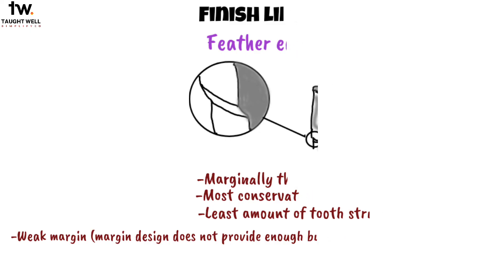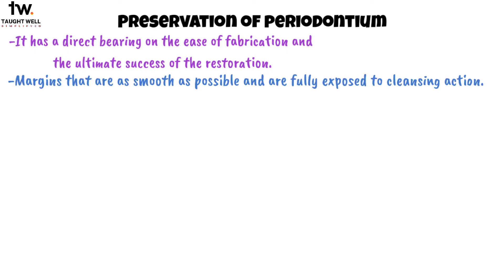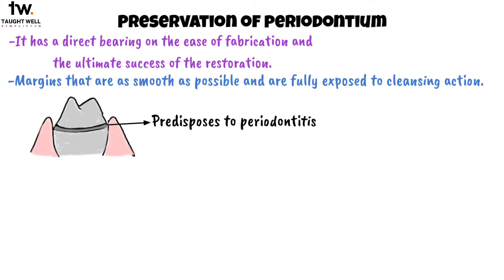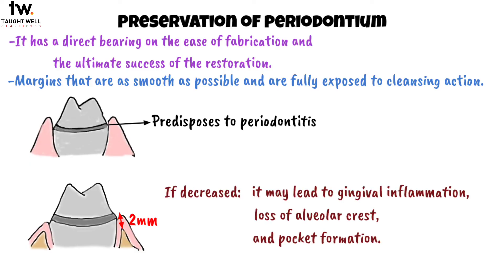The last principle of tooth preparation is the preservation of periodontium. It has a direct bearing on the ease of fabrication and the ultimate success of the restoration. The best results can be expected from margins that are as smooth as possible and are fully exposed to cleansing action. Sub-gingival finish lines predispose to periodontitis. The distance between the finish line and the alveolar crest must be 2 mm. If decreased, it may lead to gingival inflammation, loss of alveolar crest, and pocket formation.